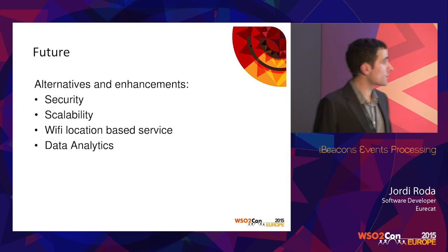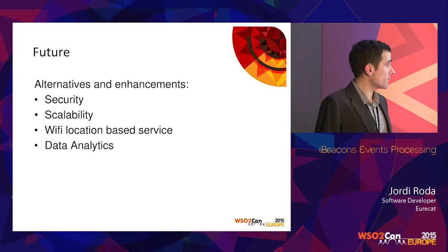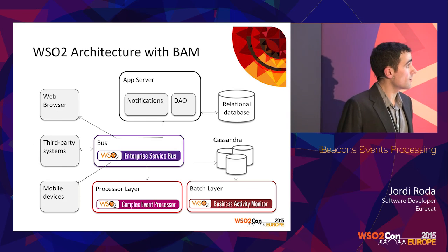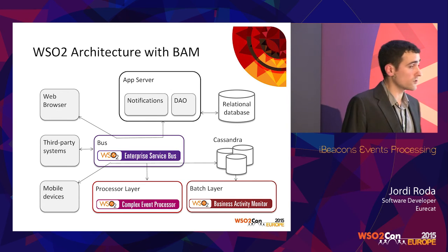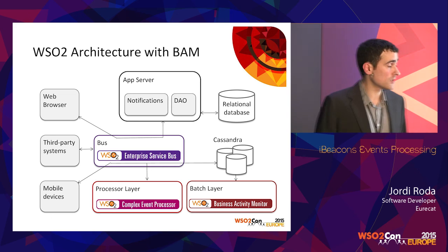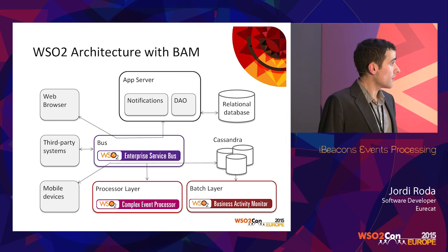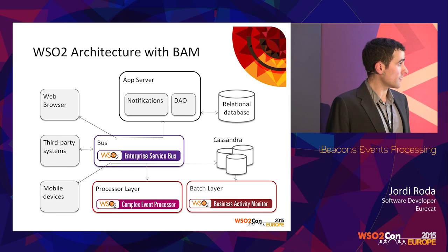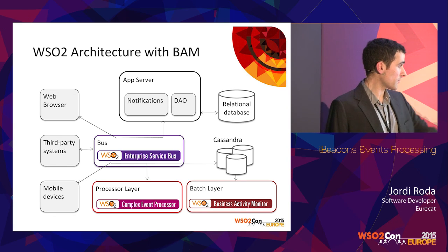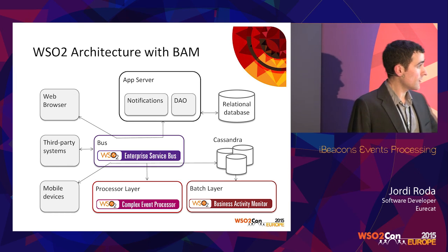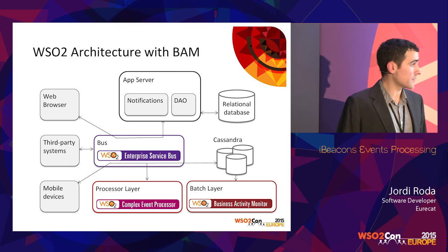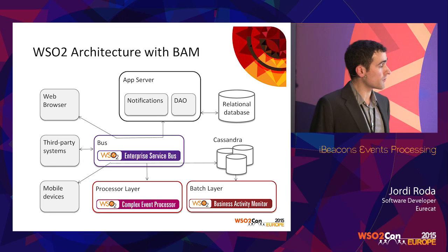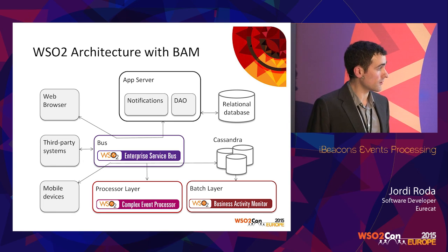We could also add post-processing analytics for the iBeacon events or for this complementary Wi-Fi system. Here we could use another WSO2 product — the Business Activity Monitor — which is commonly used alongside the CEP. In the resulting architecture, the enterprise service bus redirects all events to the complex event processor for real-time processing and also to the Business Activity Monitor for batch-based processing. We would also have a Cassandra cluster database storing events that could be pre-processed by the Business Activity Monitor.